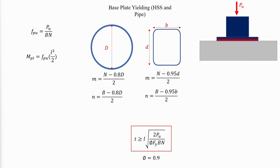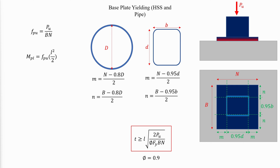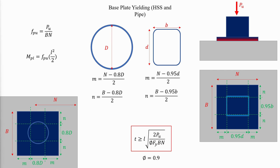For hollow steel section columns, adjustments for M and N must be made. For rectangular hollow sections, both M and N are calculated using yield lines at 0.95 times the depth and width of the hollow section. For round hollow sections and pipes, both M and N are calculated using yield lines at 0.8 times the diameter. The lambda term is not used for rectangular hollow sections and pipes.